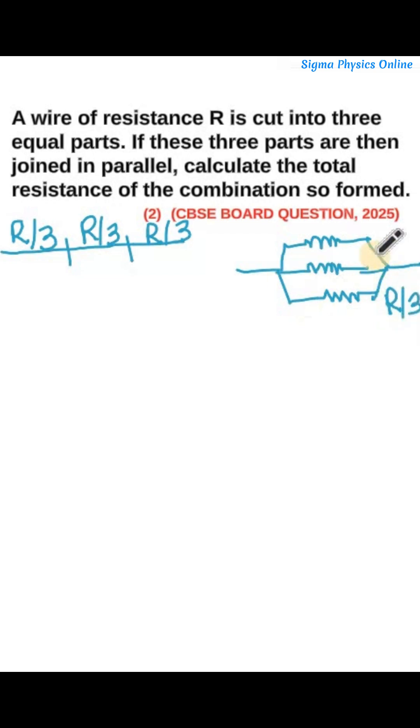Now let's find out the equivalent resistance. The equivalent resistance in parallel is given by 1 by Rp is 1 by R1 plus 1 by R2 plus 1 by R3. Substituting the values: 1 by R by 3 plus 1 by R by 3 plus 1 by R by 3.